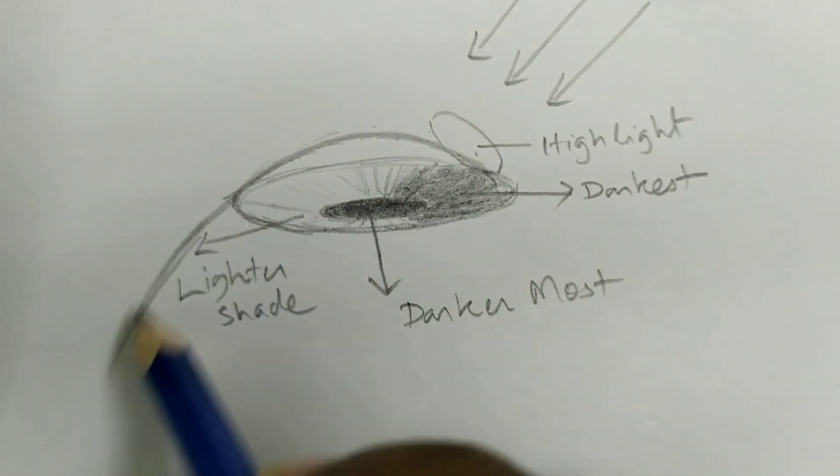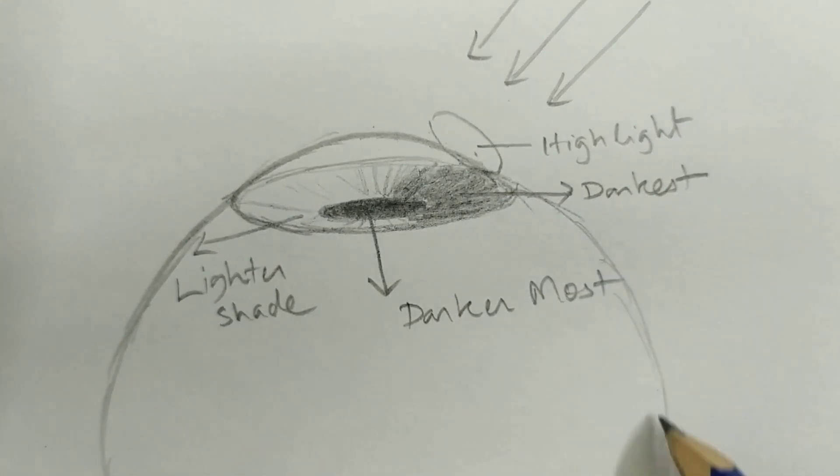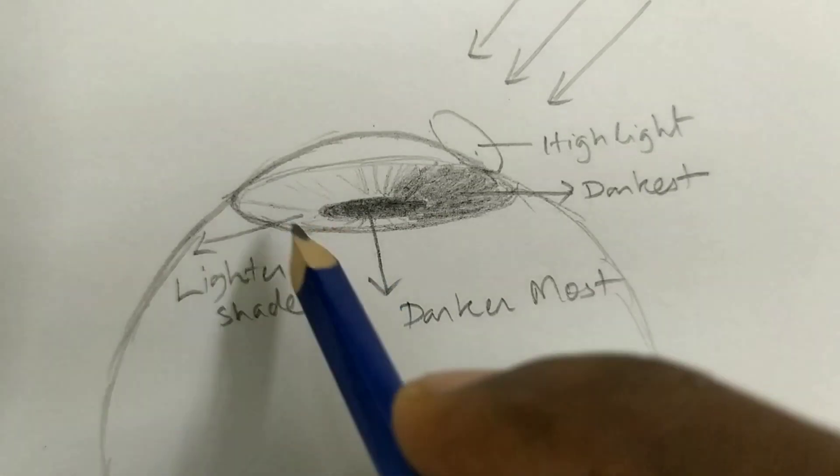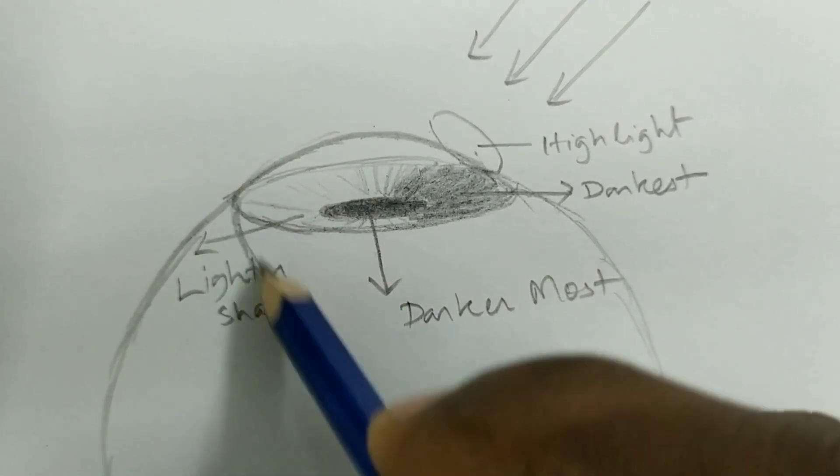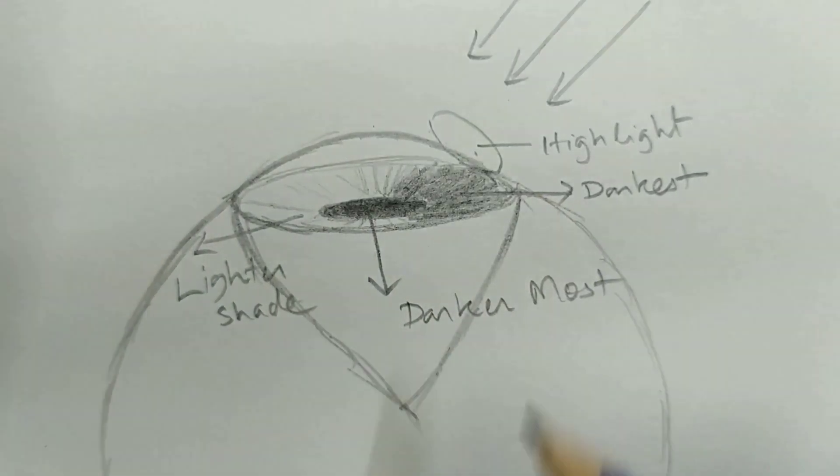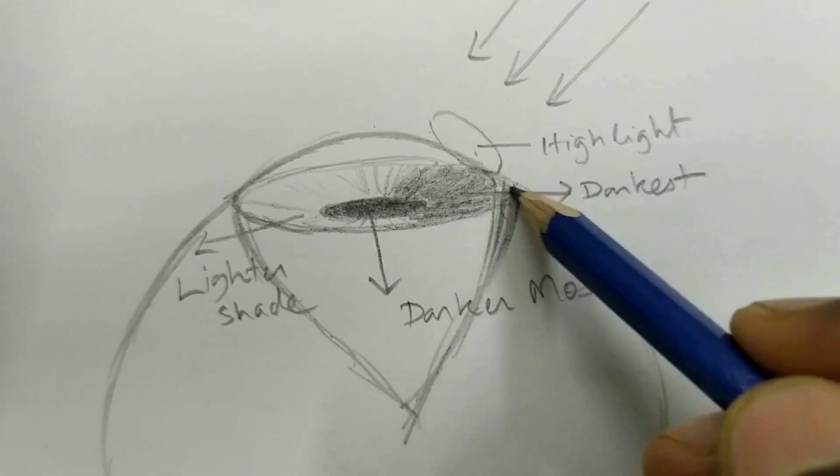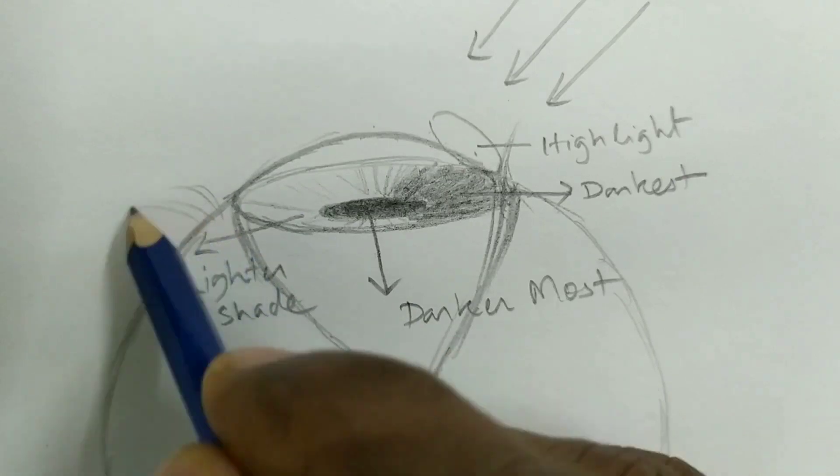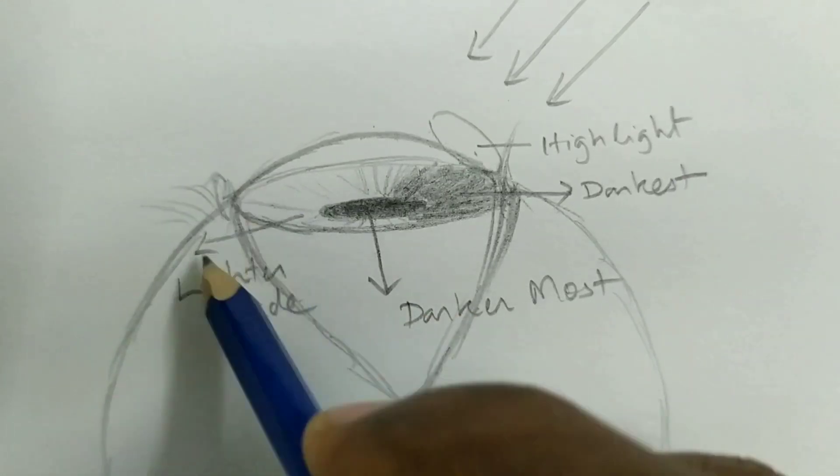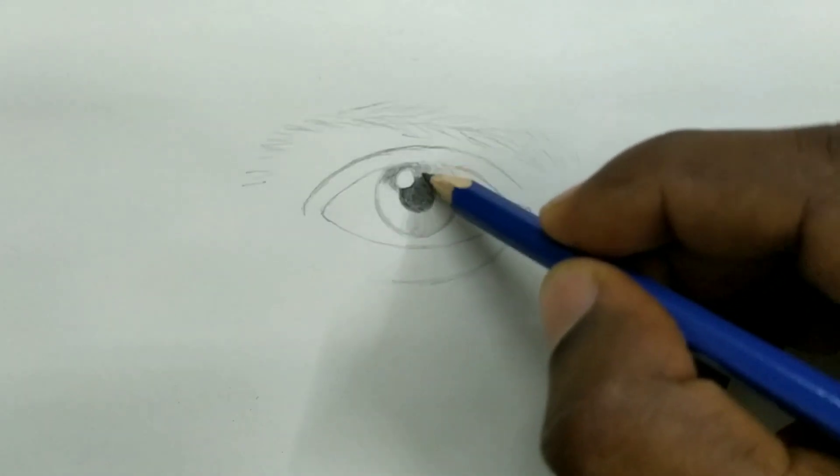See this is the eyeball which we can't see, which is inside, I am just making for your reference. And if the eyelid is there that will be like this, so we can only see that triangle portion and the cornea. I hope you understood, if you have any doubt you ask in comment section.